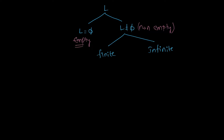An empty language can be defined as the language which does not contain any string. We can write the language as an empty set — the set doesn't contain any string. The number of strings in the language is zero. It doesn't even contain the empty string, epsilon. Even epsilon is not present in this language.